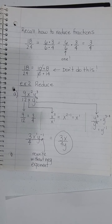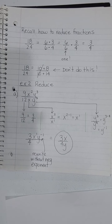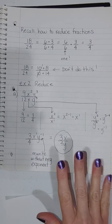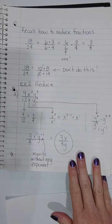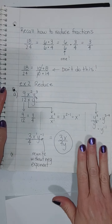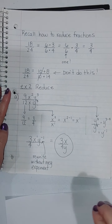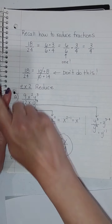Alright, this is the continuation of 7-1. We already did the restricted values. This part is going to be on how to reduce these fractions. We've done a lot of this before — it's just been a while. This was back in chapter 5, so we're just going to quickly go through it again.